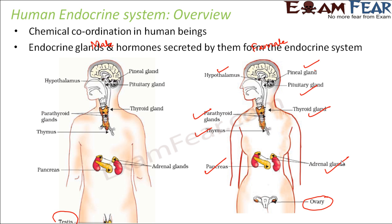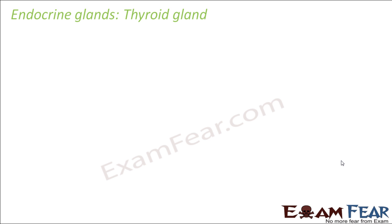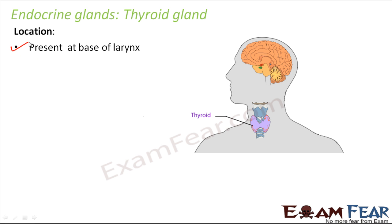Not only the endocrine glands alone form the endocrine system — the hormones released by them are more important because those hormones perform the most interesting role as far as endocrine system is concerned. Let us start our discussion with the first endocrine gland: the thyroid gland. It is located at the base of the larynx, which is the voice box, and it has a distinctive butterfly shape.